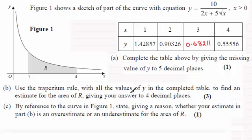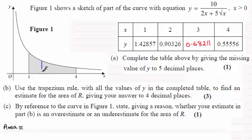In part b we've got to use the Trapezium Rule with our values of y from this table to find an estimate for the area R. The Trapezium Rule works by placing strips in here — there's a strip at x equals 2 and another strip at x equals 3, not drawn to scale. So we're working out the areas of these trapeziums.